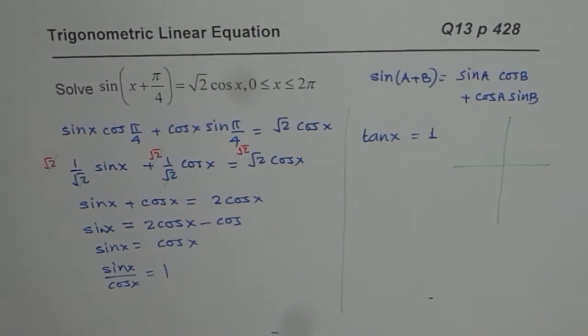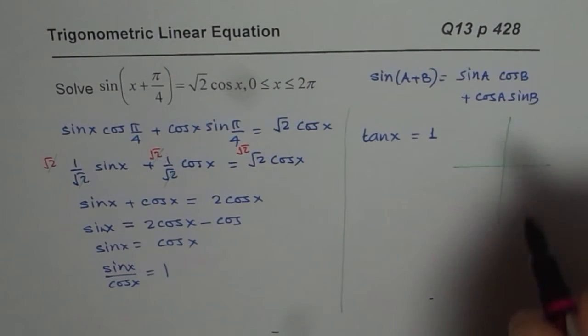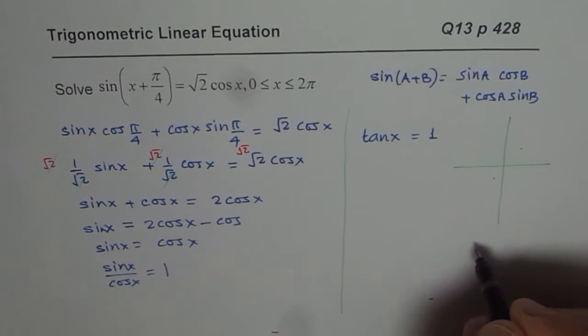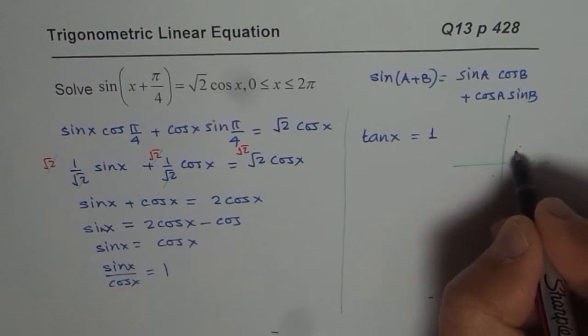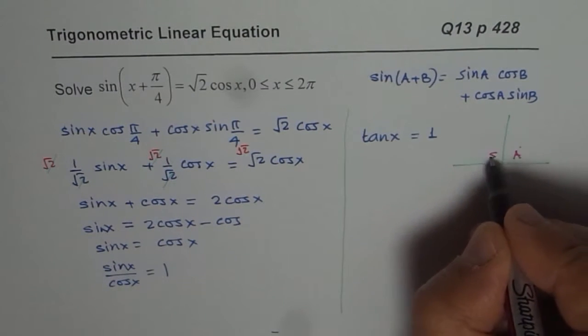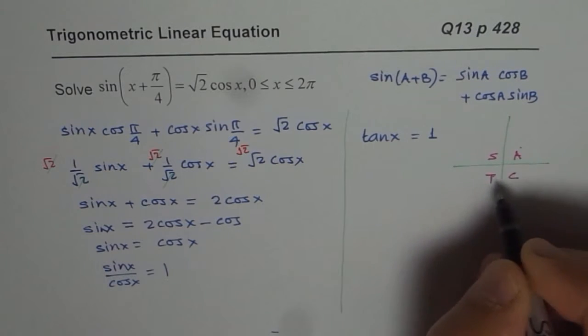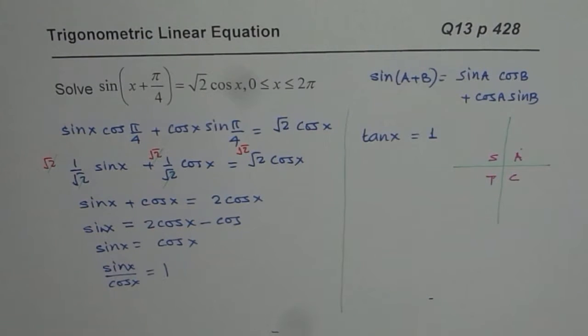we know tan is positive in quadrant 1 and in quadrant 3. All trigonometric functions are positive in quadrant 1. So tan is positive in quadrant 1 and in quadrant 3, giving us 2 possible solutions in the domain 0 to 2π.